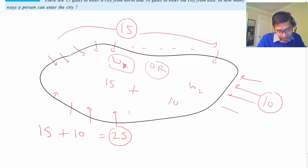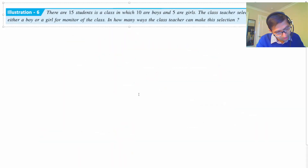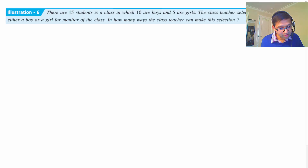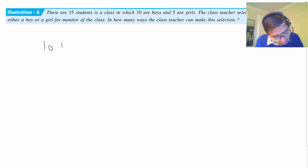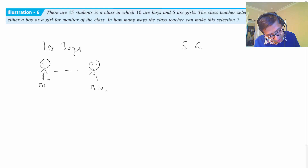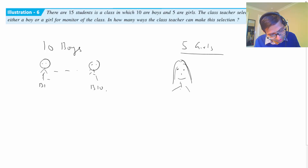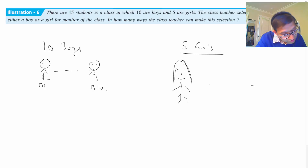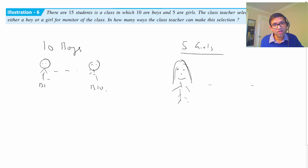Let's see the next example. There are 15 students in a class, of which there are 10 boys and 5 girls. In how many ways can the class teacher select either a boy or a girl to be the monitor of the class?